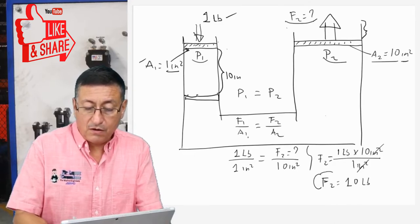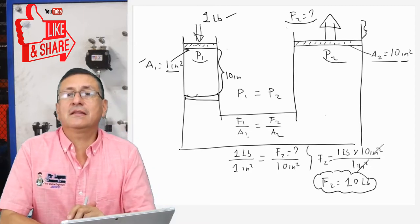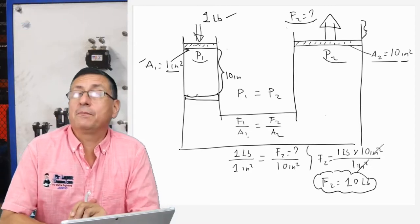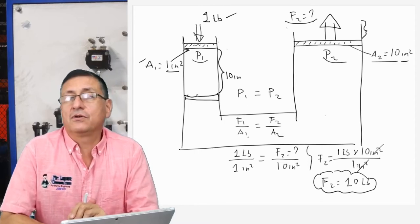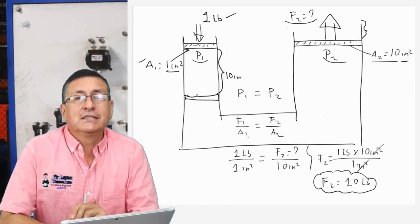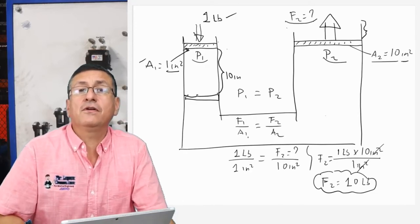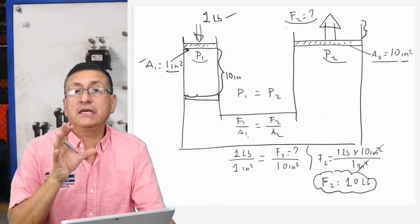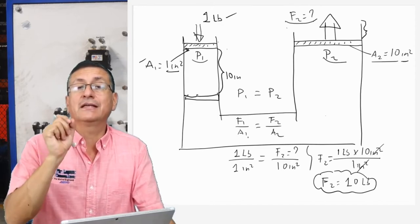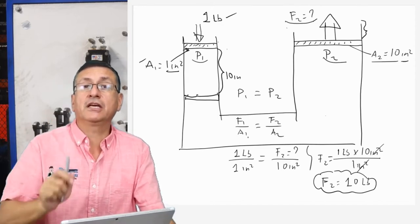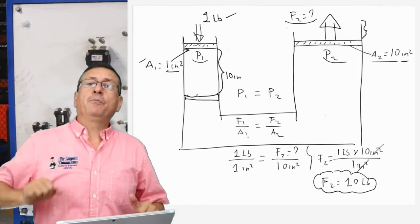The force number two is equal to ten pounds! I multiplied the force ten times in this particular example because the area of the piston increased ten times. All of this is possible because the fluid is a hydraulic fluid and because the system is completely hermetic — completely closed. This is the output force.